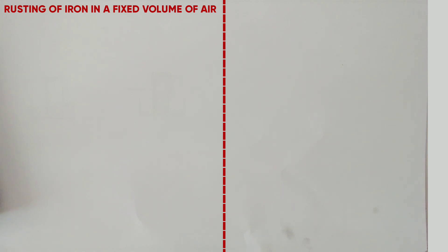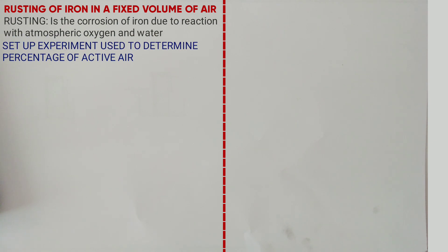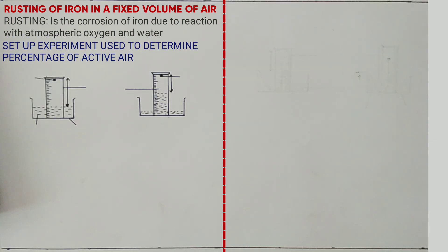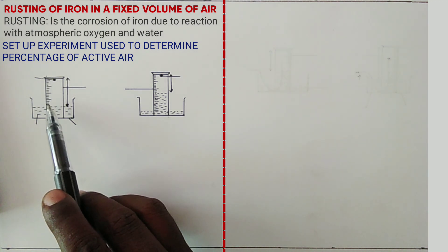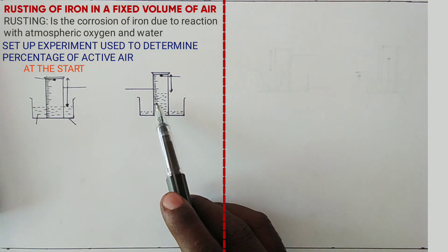The first experiment we begin with is rusting of iron in a fixed volume of air. We define what is rusting. Rusting is the corrosion of iron due to reaction with atmospheric oxygen and water. The setup diagram below shows experiments used to determine the percentage of active air — one at the start of the experiment and one at the end of the experiment.